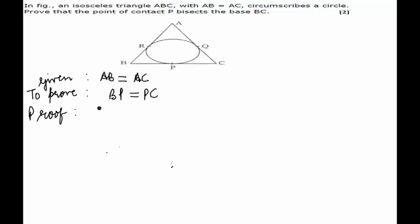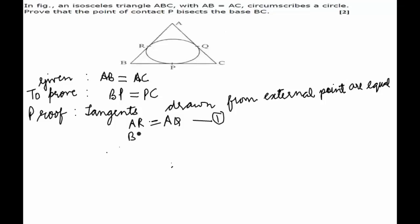As we know that the tangents from an external point are equal, thus AR will be equal to AQ. Let this be equation number 1. Similarly, BR would be equal to BP, let this be equation number 2. And CP is equal to CQ, equation number 3.